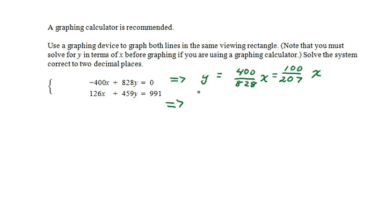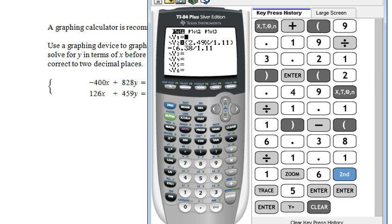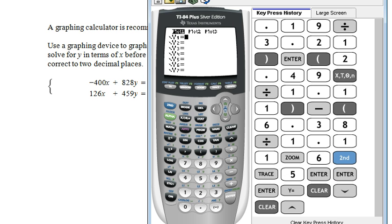And in the second case, we'll have y equals negative 126 over 459x plus 991 over 459. So, we go to our graphing calculator, let's go back to the y equal, clear the two equations.